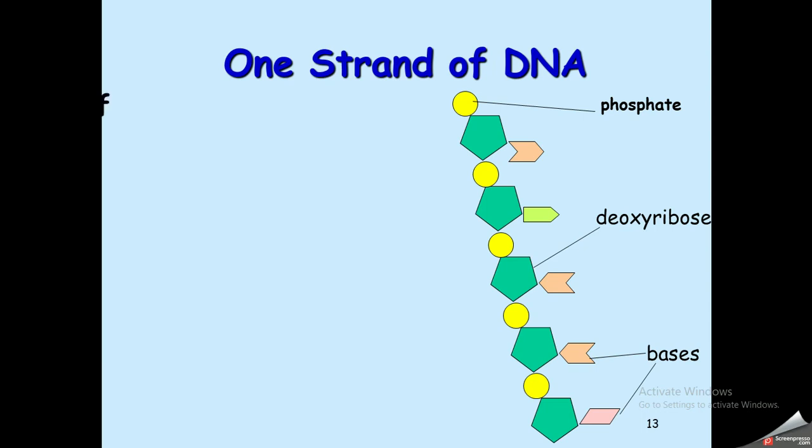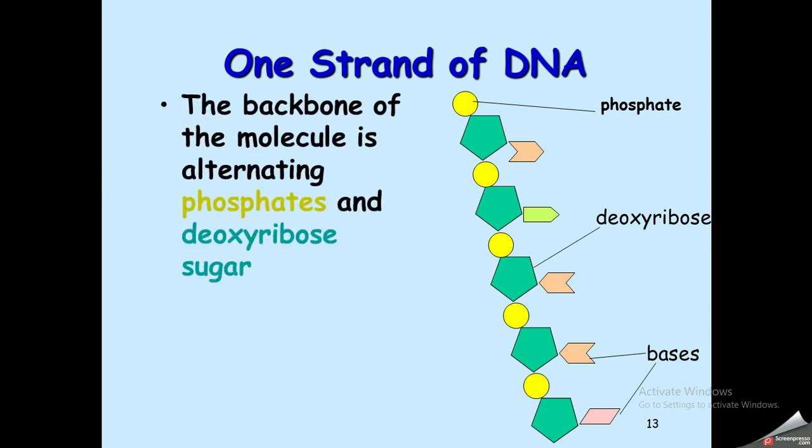Each one of these two strands that form the DNA consists of a polymer of phosphate (shown in yellow), deoxyribose (the sugar in DNA), and nitrogen bases.